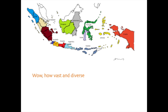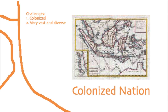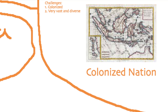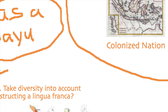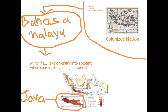Indonesia is the fourth most populous nation in the world, with an estimated population of nearly 250 million people. It consists of over 13,000 islands stretching along the equator between Southeast Asia and Australia, with a significant number of distinct ethnic groups speaking an estimated 600 regional languages. As a colonized nation, Indonesia didn't have much going for it as far as a national linguistic policy, given the challenges of overcoming colonial rule and its geographic challenges as a very vast archipelago. The key point of Indonesia's linguistic success is planning a language that takes the nation's diversity into account.